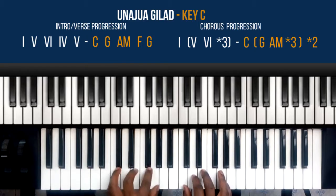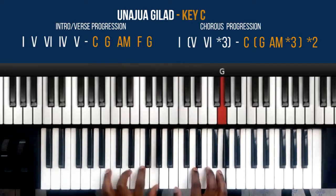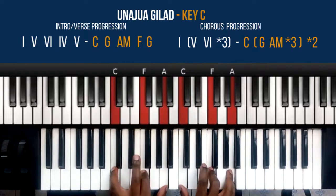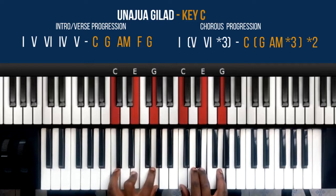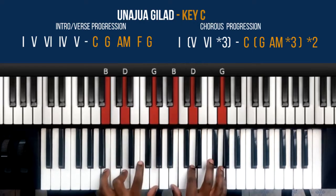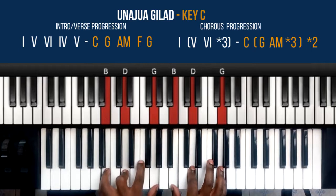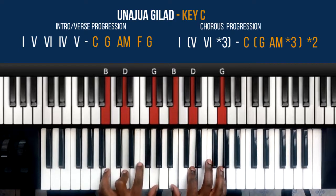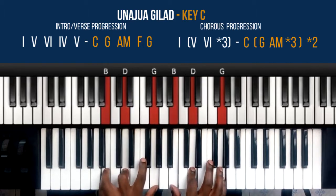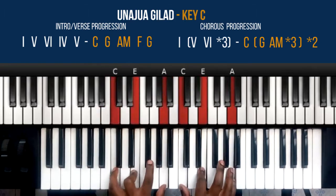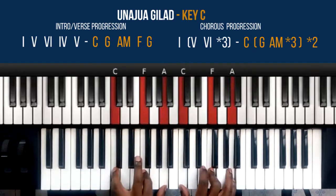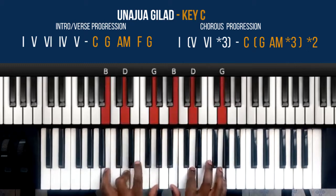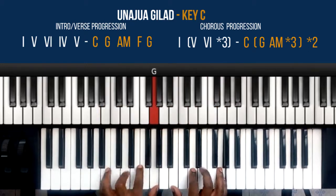On the verse, the progression is 1, 5, 6, 4, 5, 1. The 1 is C. This is an inversion of the D chord — I mean, this is C. This is G, first inversion of the G chord. 6, which is A minor, first inversion. Second inversion of F chord. And then G, 1.